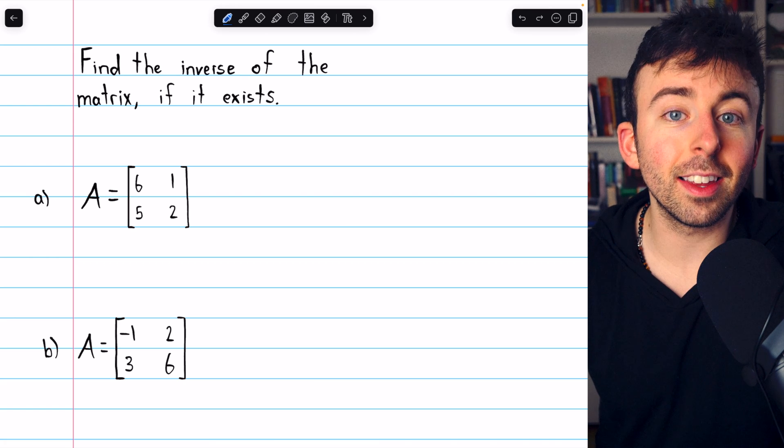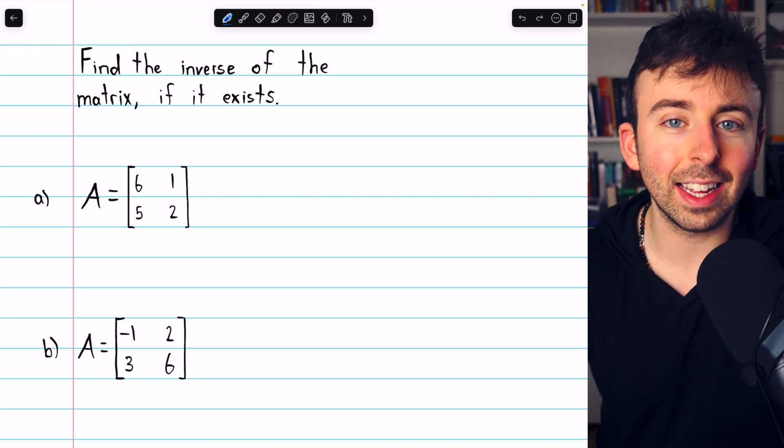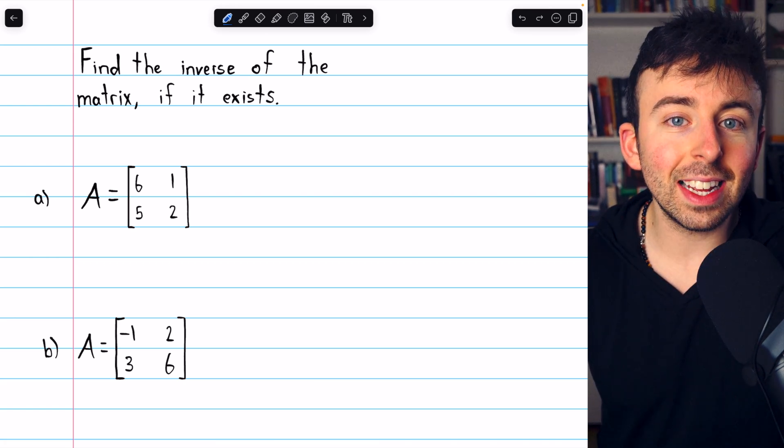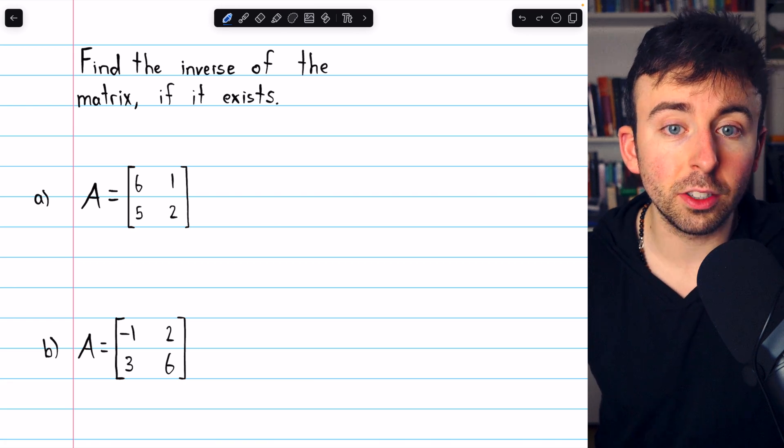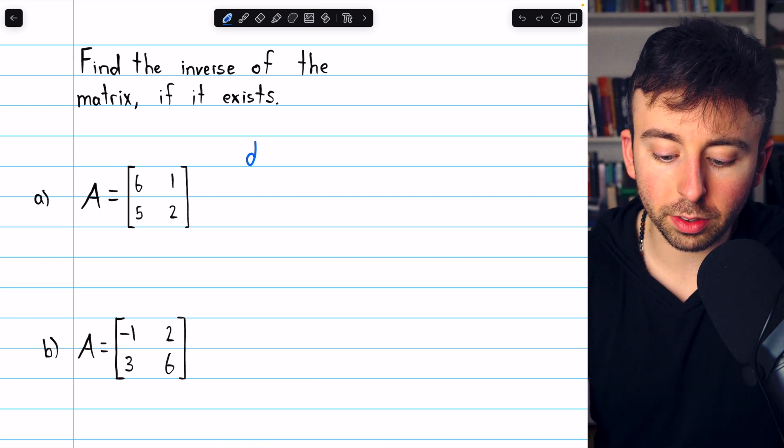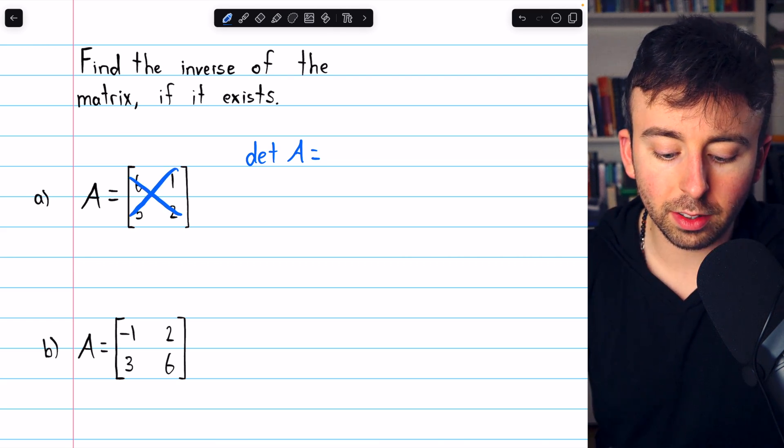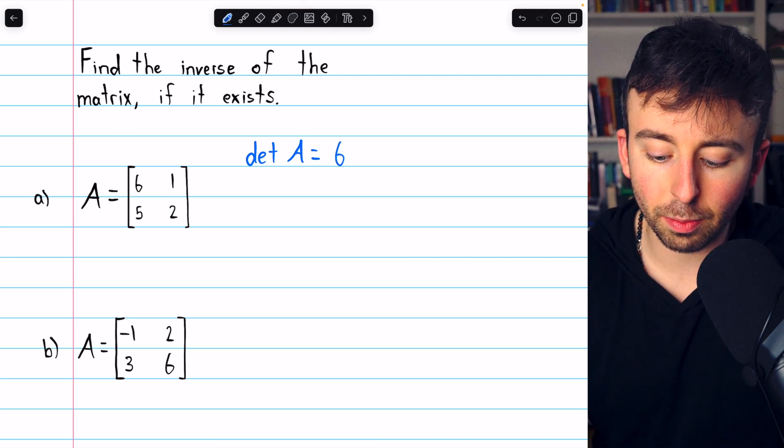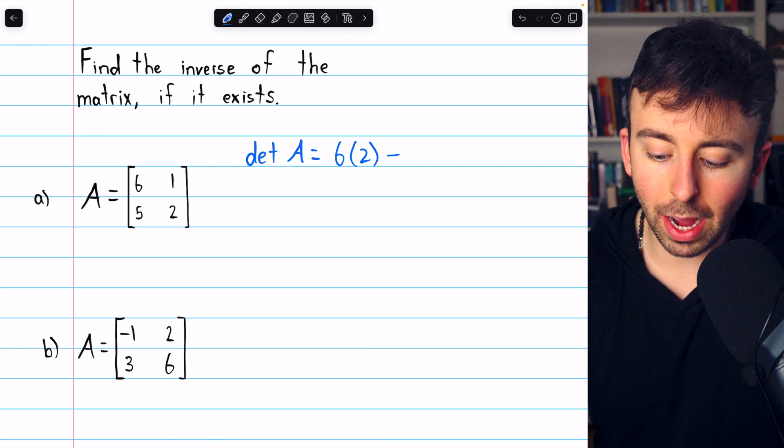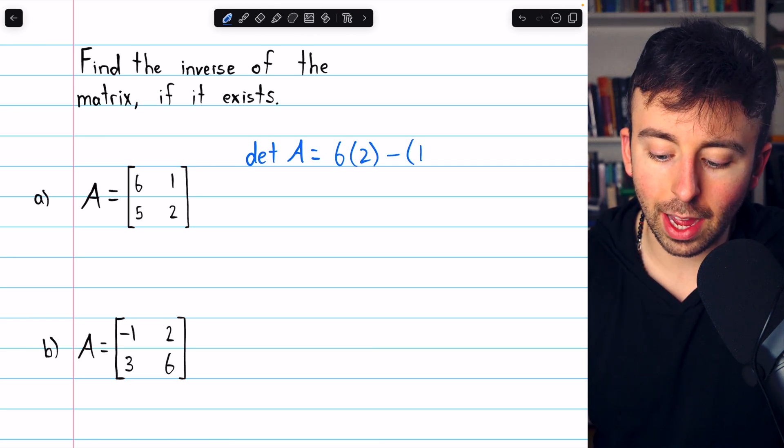Let's begin with problem A here. We want to begin by finding the determinant, because if the determinant is 0, then we can't take an inverse. If the determinant isn't 0, then we'll need it to compute the inverse. So we'll start by finding that determinant. And again, remember, that's just the difference of the products of the diagonals.